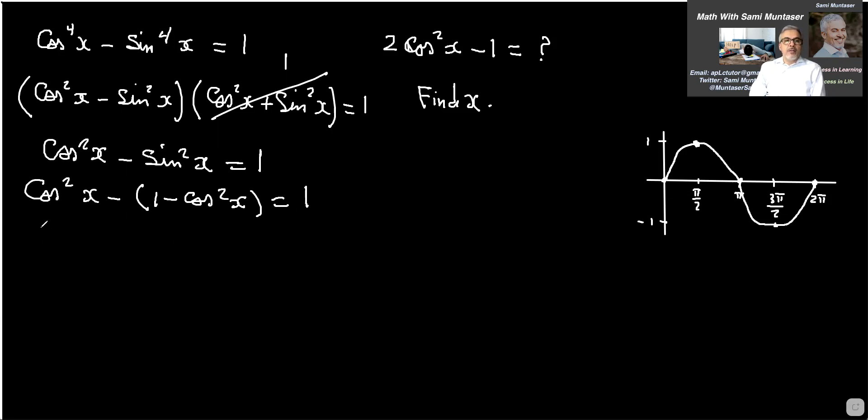Now this negative is a sign changer. So that becomes negative one, that becomes plus cos squared x, which will give me two cos squared x minus one equals one. And therefore the answer for the first one was one.